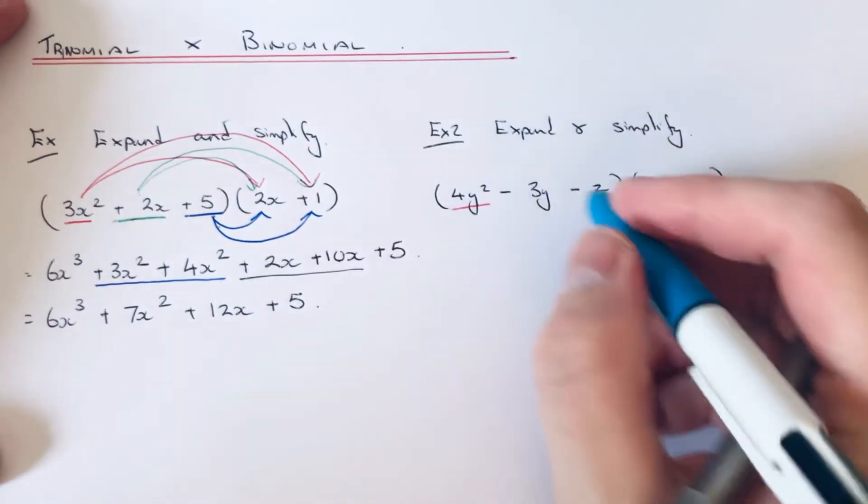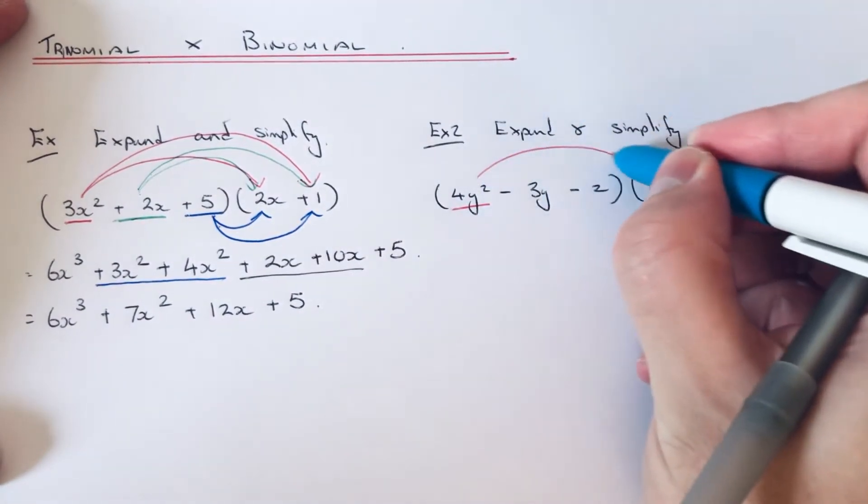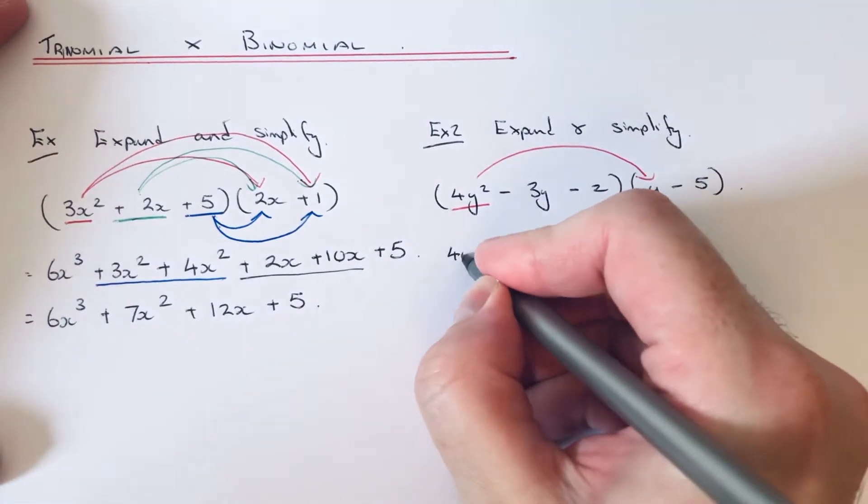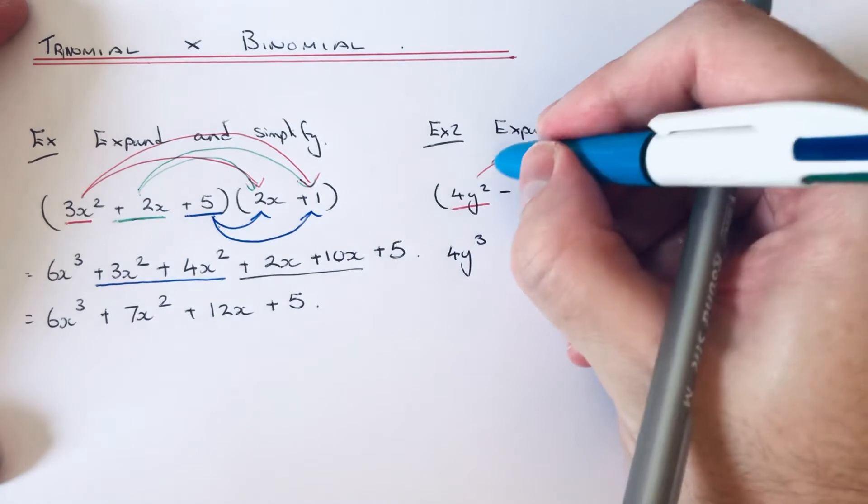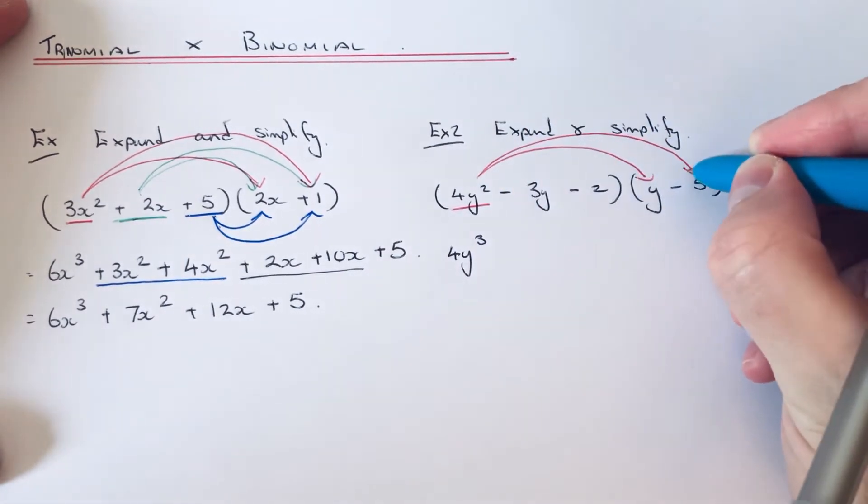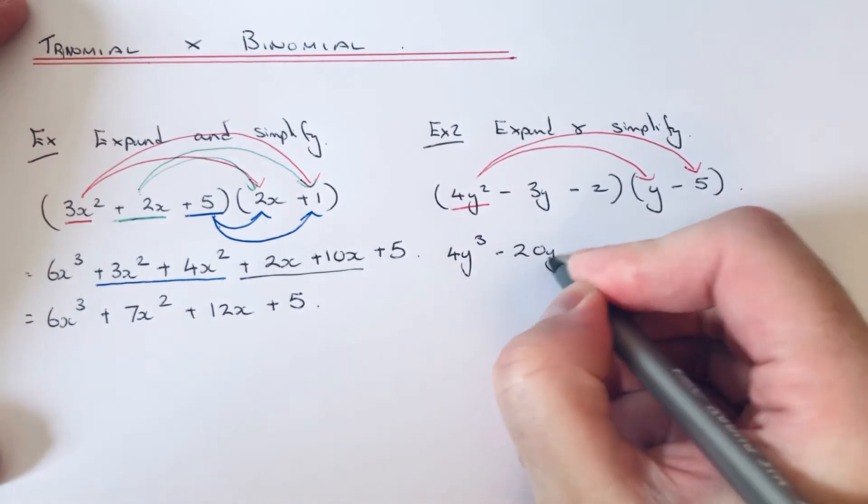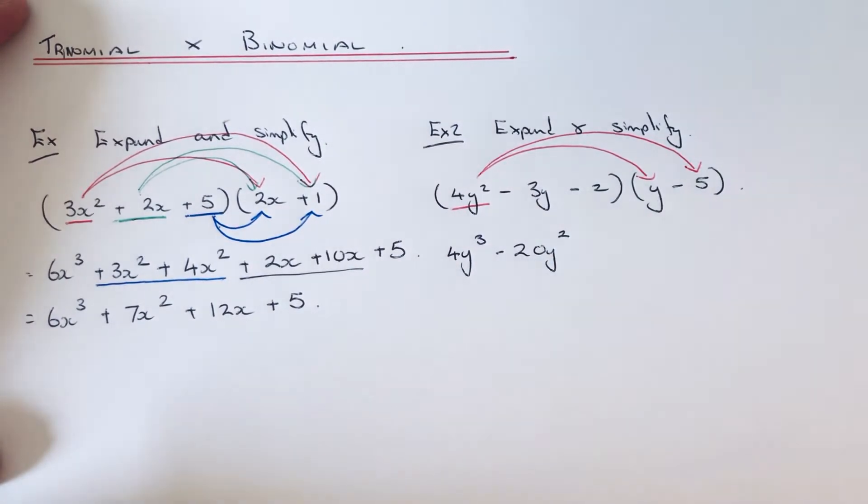Then multiply the 4y² by the minus 5, which is minus 20y². Then move to the second term of the trinomial, which is minus 3y, and multiply that by the y first of all, which is minus 3y².